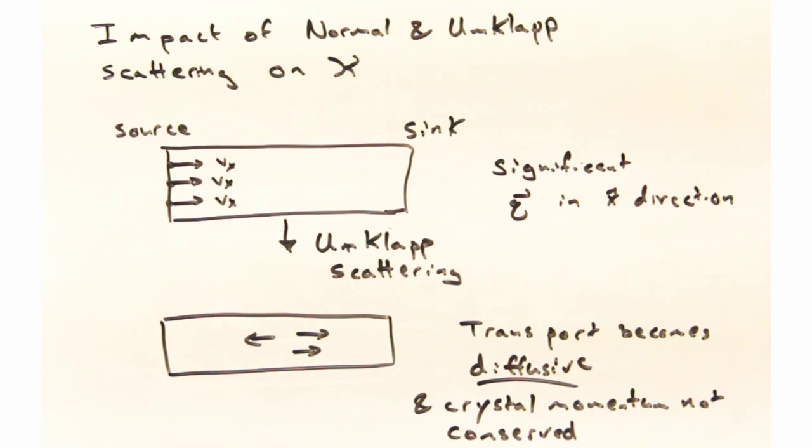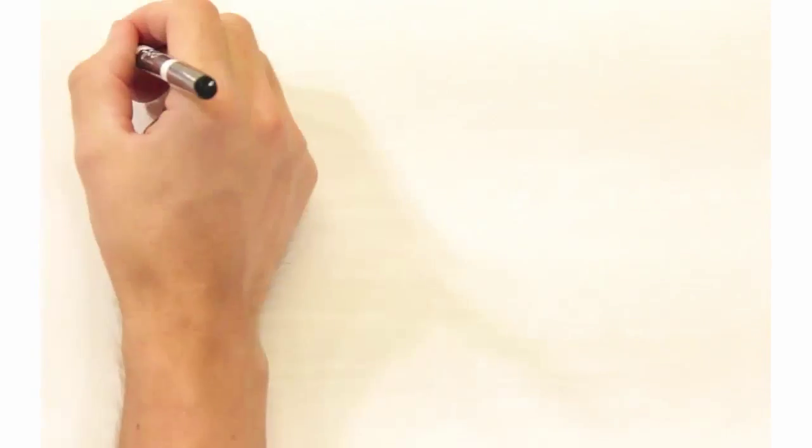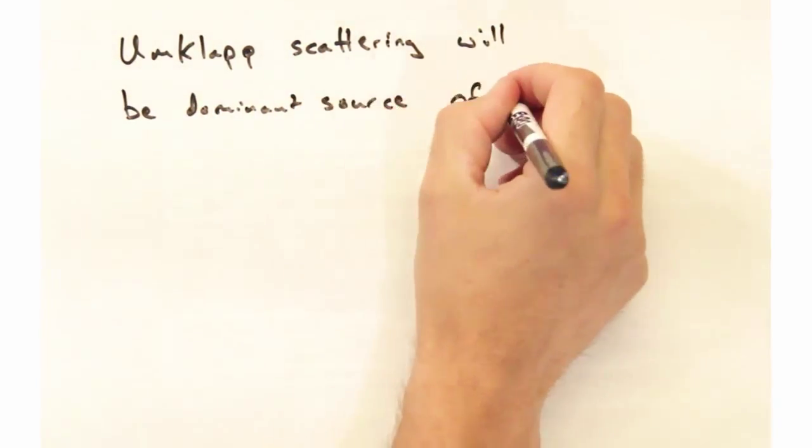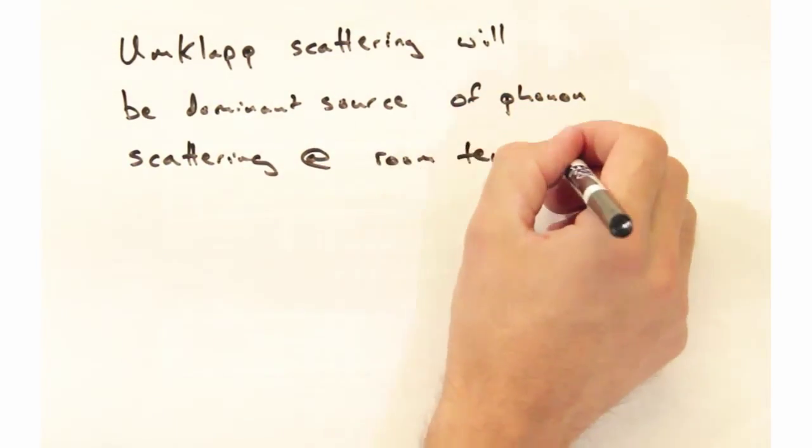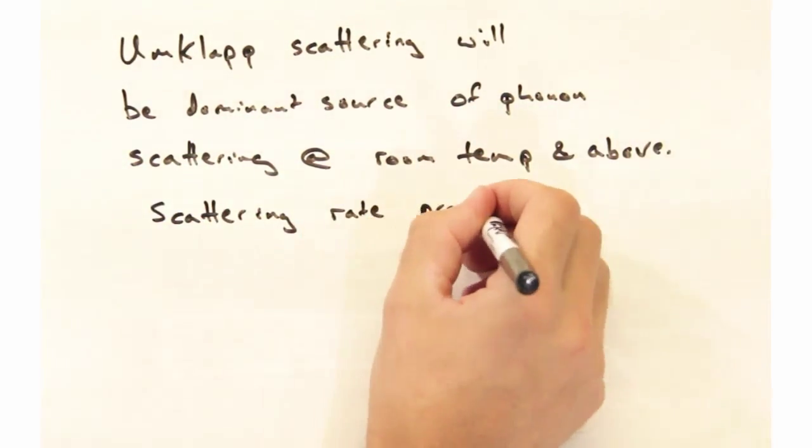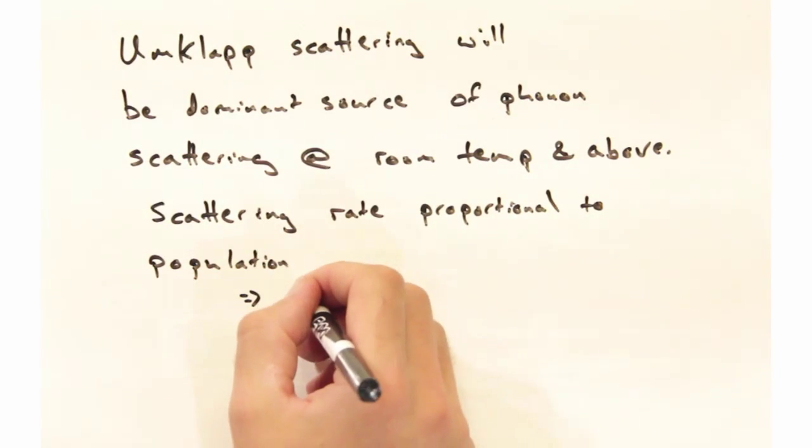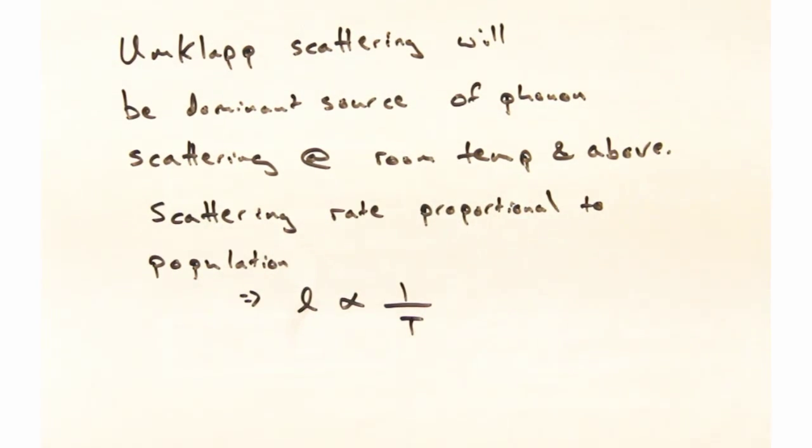This continues to be pretty hand-wavy, but let's bring this umklapp scattering back to the phonon mean-free path and thermal conductivity. Umklapp scattering is going to be the dominant source of phonon scattering at room temperature and above, with the scattering rate proportional to the population. From this, we obtain that the mean-free path for phonons is inversely proportional to the temperature. Increasing temperature increases the phonon population and decreases the mean-free path.